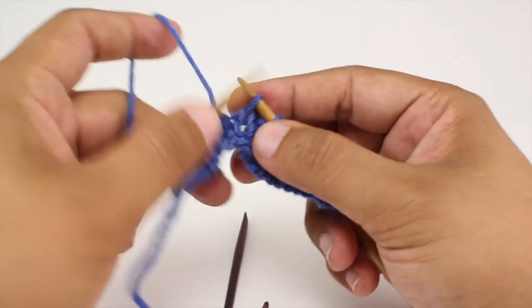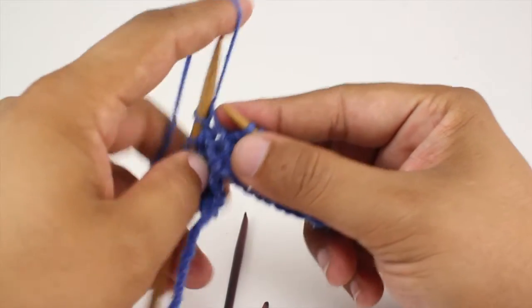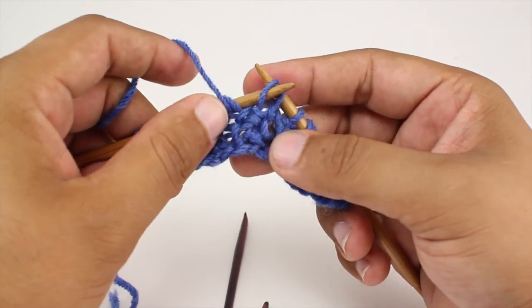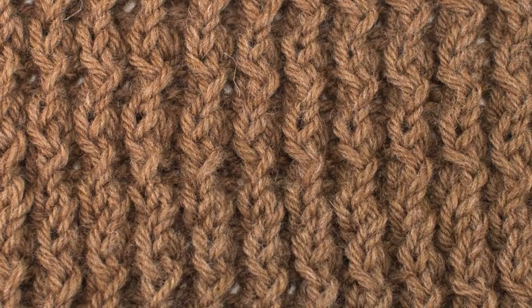Repeat rows 1 through 4 until you've reached your desired length. And that's how you knit the small wavy cable stitch. After a few repeats your pattern should look like this.